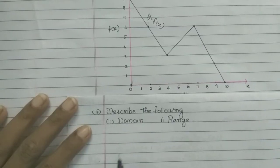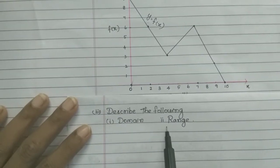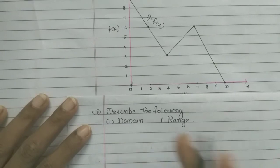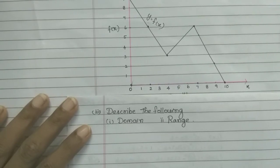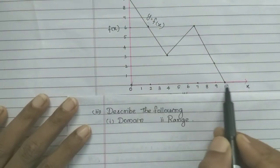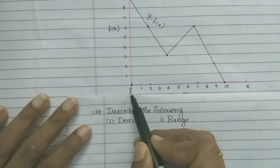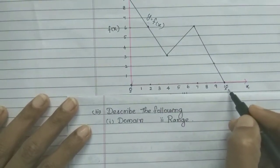Next question, third subdivision: describe the domain and range. The domain is the first set in any relation — it corresponds to the x-axis values. Looking at the graph, the x-axis values run from 0 to 10, so the domain includes the elements 0, 1, 2, 3, 4, 5, 6, 7, 8, 9, 10.